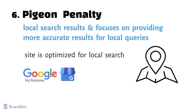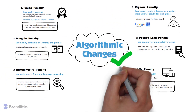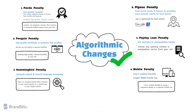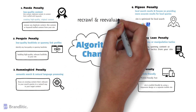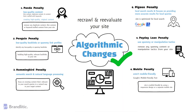In order to fix any algorithmic penalty, you need to address the specific issue that caused the penalty, whether it's low-quality content, spammy backlinks, or other issues. Once you've fixed the issue, it may take some time for Google to recrawl and re-evaluate your website. You should keep monitoring your site's performance and make ongoing improvements to avoid any future penalties.